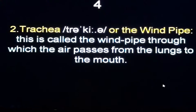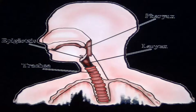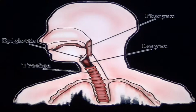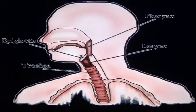The trachea is the windpipe through which air passes from the lungs to the mouth. Here you can see the two lungs — air comes from the lungs and goes upwards, passing through this passage. Then it enters the larynx. This upper part of the larynx is the epiglottis, and then the air passes into the mouth passage. This area is called the pharynx, and if the nasal passage is closed, the air comes out through the mouth passage to produce several sounds.